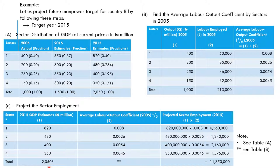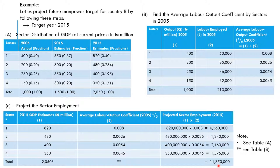To project the sector employment in 2015, multiply the value in column 1 (the 2015 GDP estimate) by the value in column 2 (the average labor output coefficient). So, for example: 820 million times the coefficient, 480 million times the coefficient, 400 million, and 350 million — remembering that all values are in millions. When you sum these up, that gives us 11,353,000. This means 11,353,000 workers will be required in 2015.